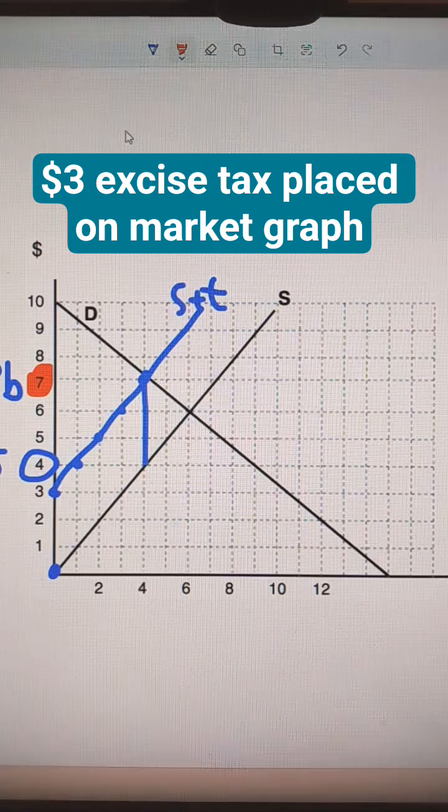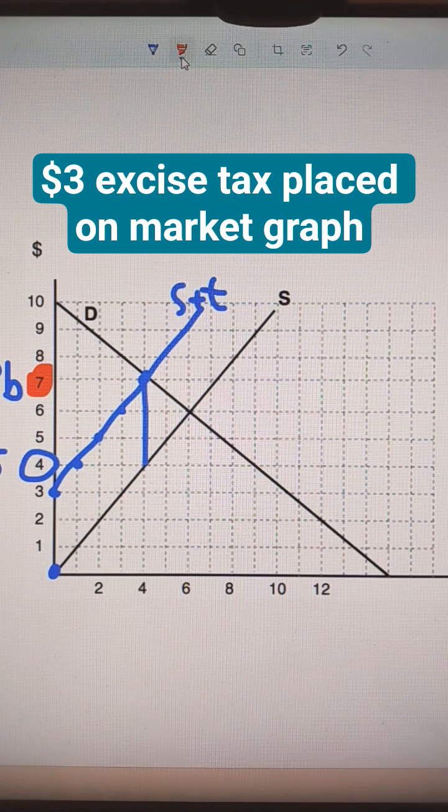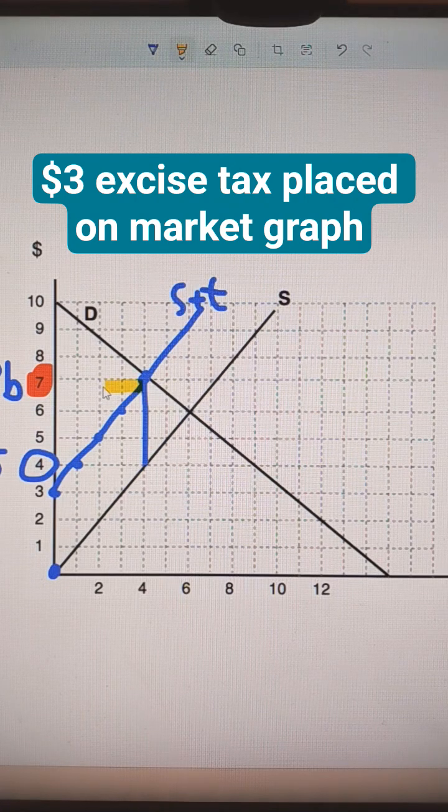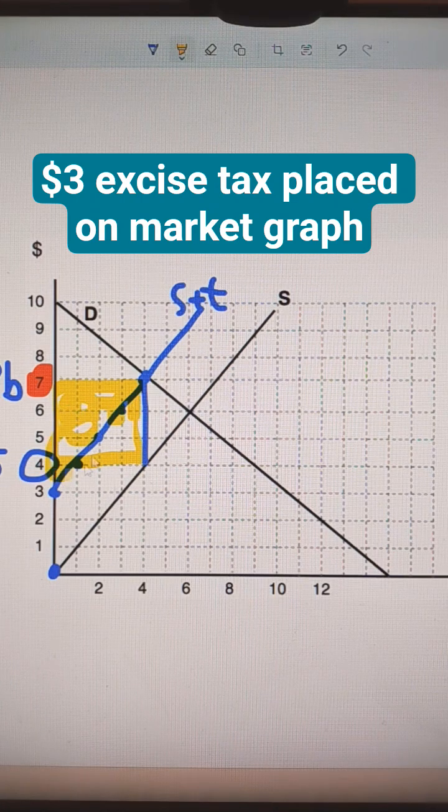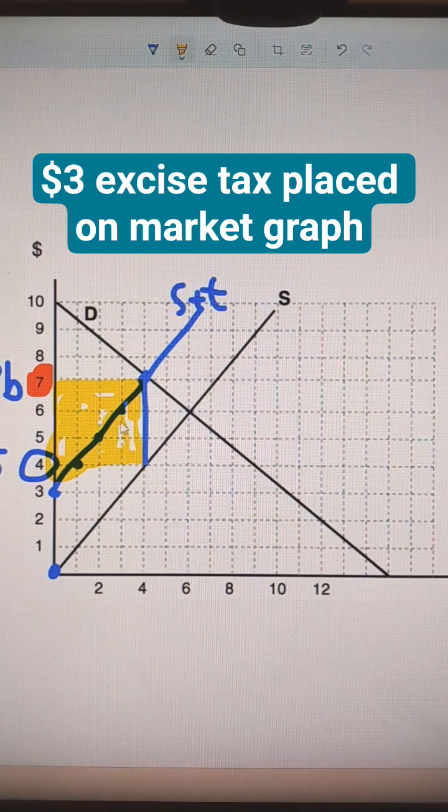The government tax revenue is going to be this yellow area, which is the $3 tax times those four units. So that would be a total of 12 there.